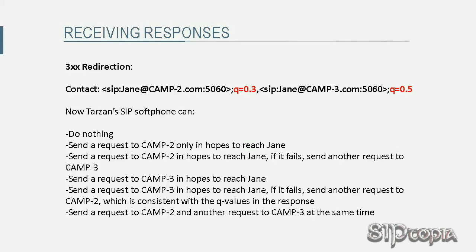Now Tarzan's SIP phone can choose to do any of the following: do nothing; send the request to camp 2 only in hopes of reaching Jane; send the request to camp 2 and, if it fails, send another request to camp 3; send the request to camp 3 first and, if it fails, send another request to camp 2, which is consistent with the Q values in the response; or send requests to camp 2 and camp 3 at the same time. The SIP phone has multiple options and can choose any of those.